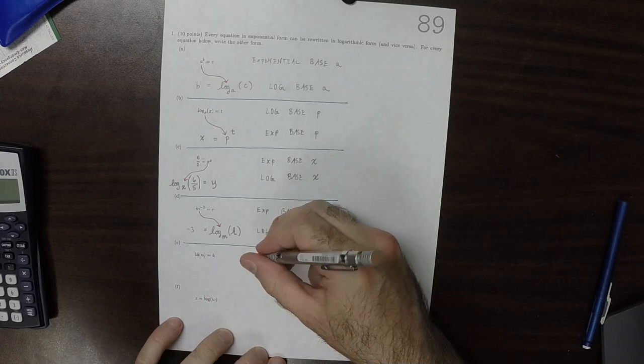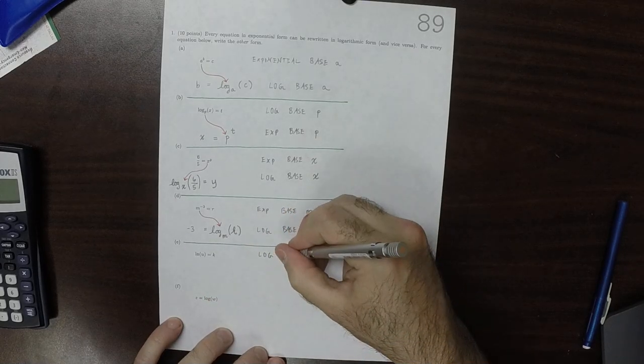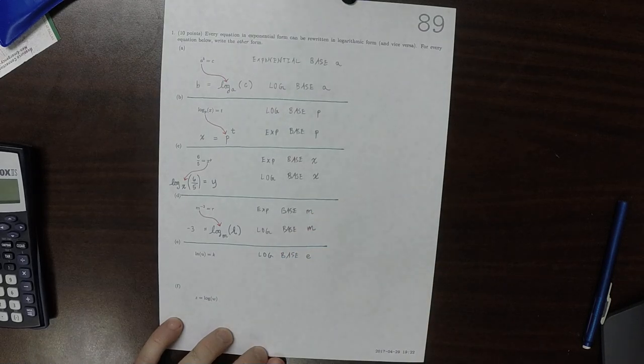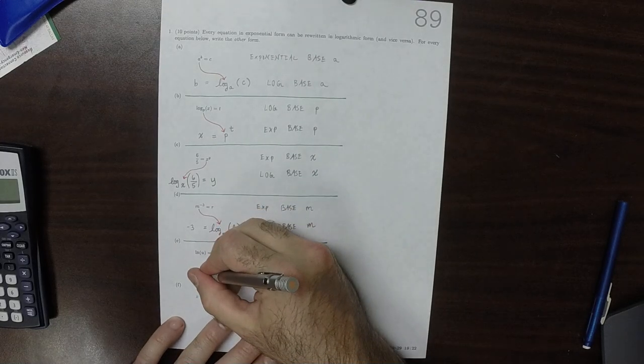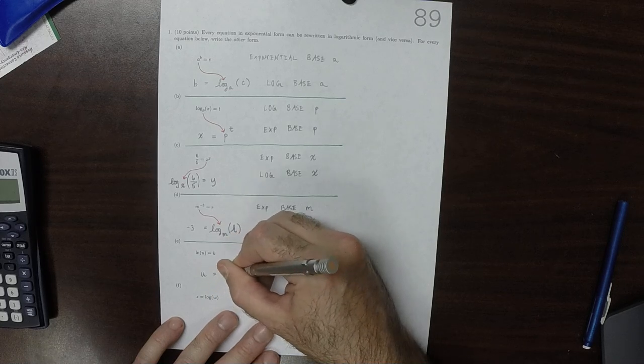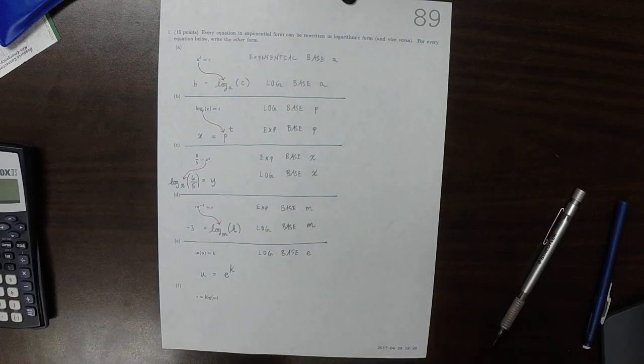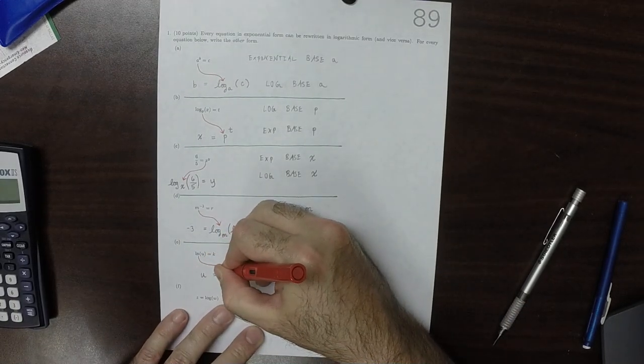So now this is in log base E. That is to say the natural base. So now it will be base E on the other side. So that will be U is E to K. So the base will change sides.